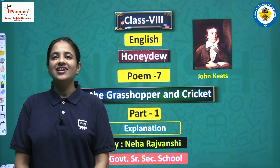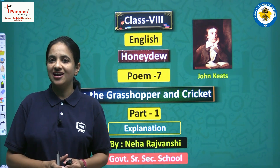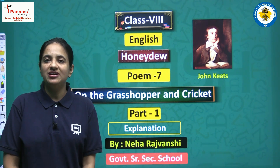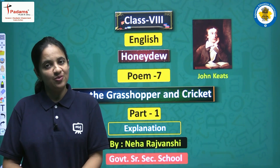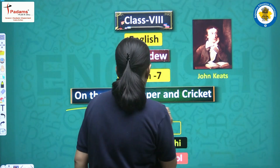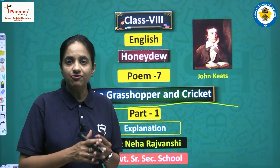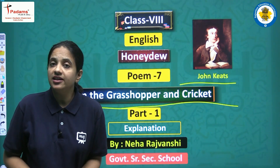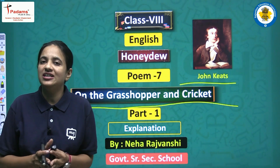Hello students, I am Neha Rajabanshi and I welcome you all to today's English class for class 8th. In today's video we will start reading our next poem from the book Honeydew — this is in fact the last poem from our book. It is poem number 7, titled 'On the Grasshopper and Cricket,' written by the very famous poet Mr. John Keats.